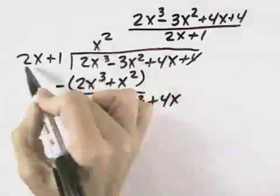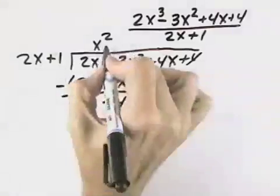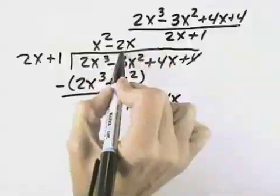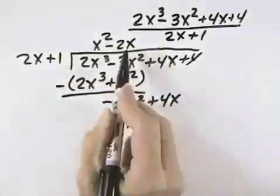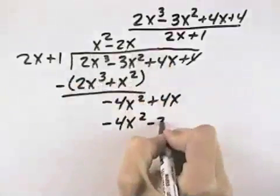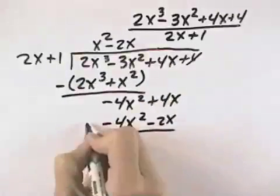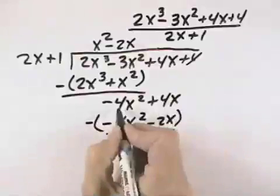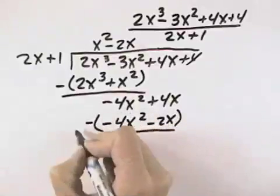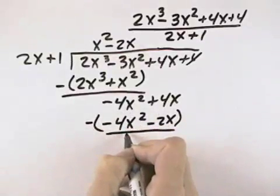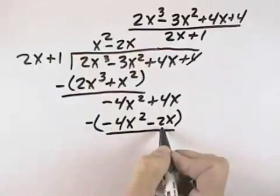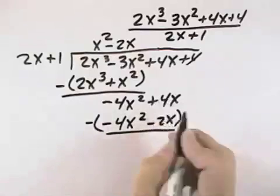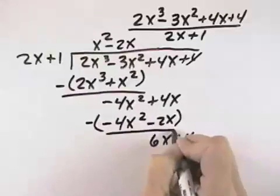Now we say 2x goes into negative 4x squared a negative 2x times, because negative 2x times 2x is negative 4x squared. Then we have negative 2x times 1, which is minus 2x. Now when we subtract, negative 4x squared minus a negative, which becomes plus 4x squared, is 0. And 4x minus a negative, which becomes plus 2x, is 4 plus 2 is 6x. And we bring down our 4.